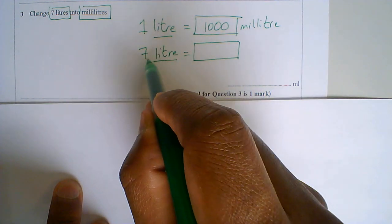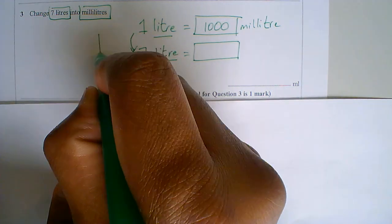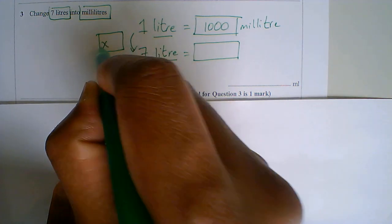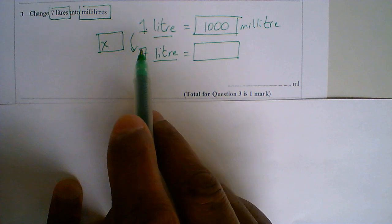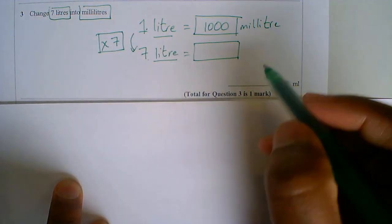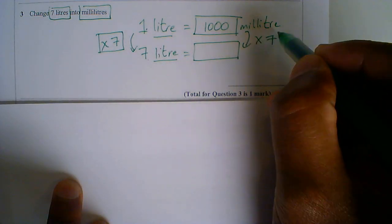So I'm going from 1 to 7. What am I multiplying by to get from 1 times something gives me 7? It must be 7. So I do the same thing on this side, times by 7.